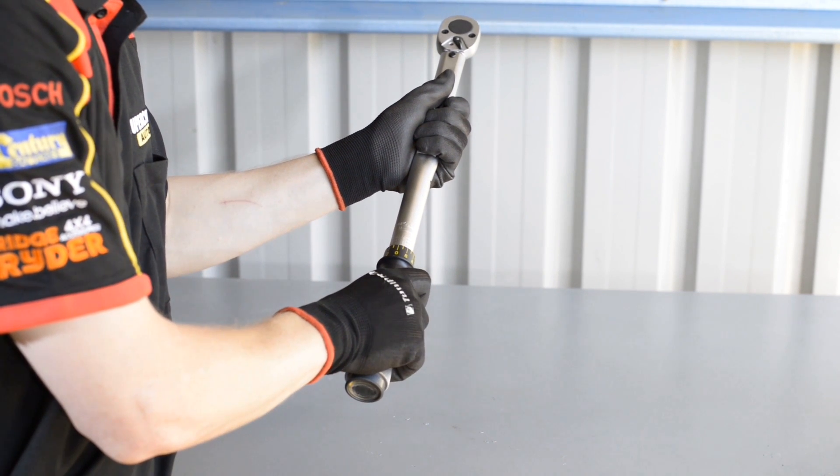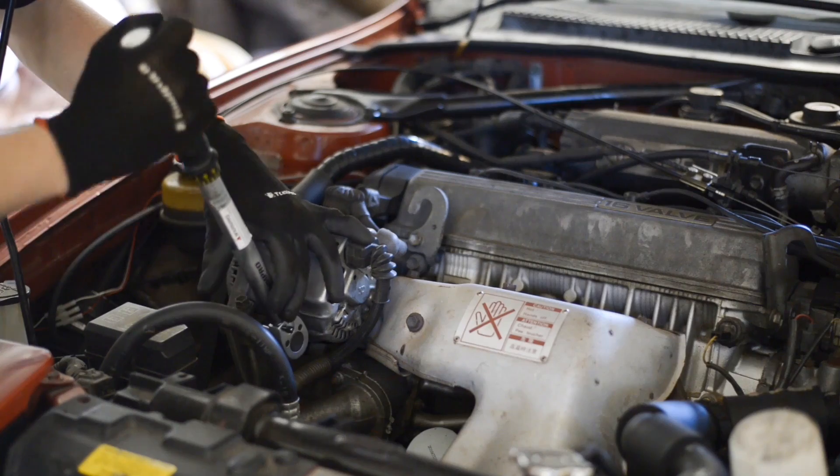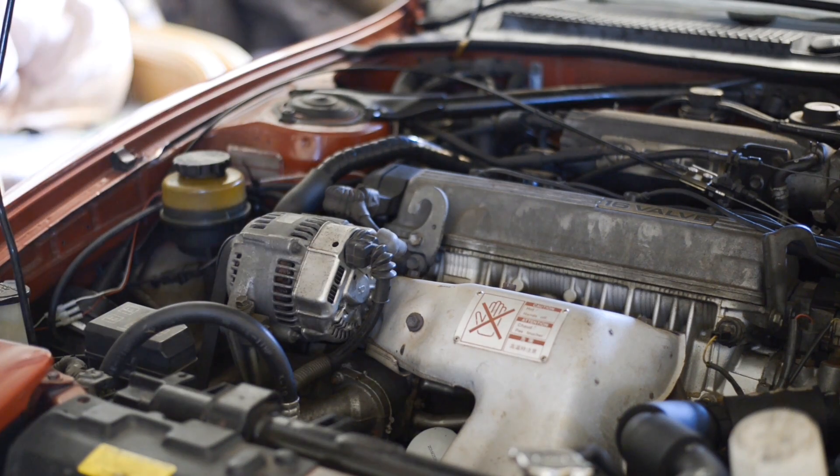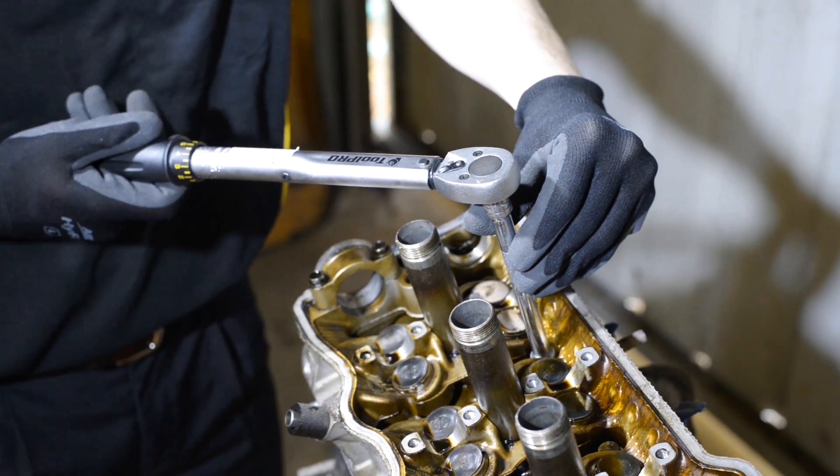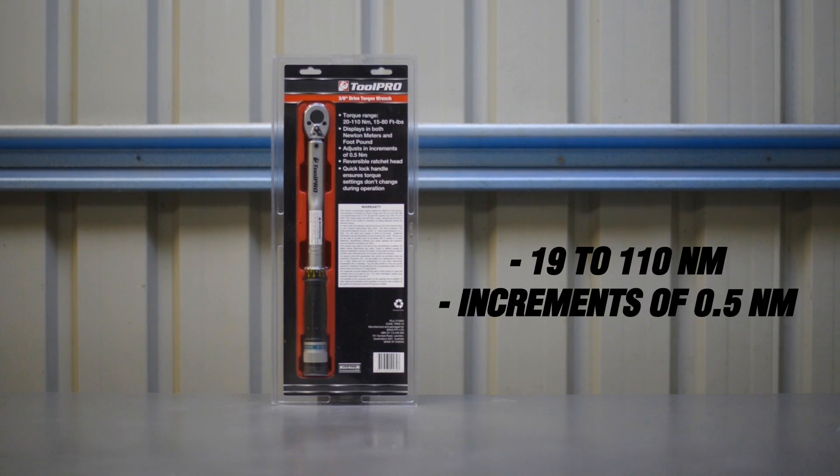Keep in mind that the single digit scale does not apply to foot-pound measurements. The 3/8ths drive torque wrench is a great all-rounder under the bonnet and during engine and driveline rebuilds. This model has a torque range of 19 to 110 Nm and is adjustable in increments of half a Nm.